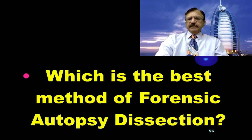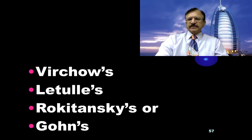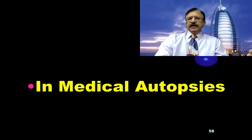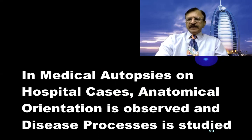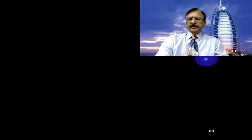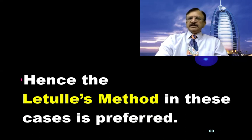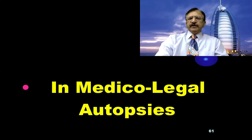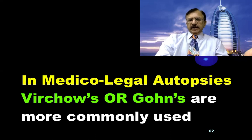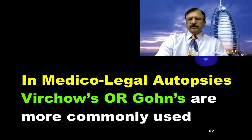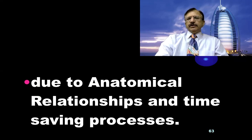So which is the best method of forensic autopsy dissection — Virchow's, Letulle's, Rokitansky's, or Ghon's? In medical autopsies on hospital cases, anatomical orientation is observed and the disease process is studied, so Letulle's method is preferred in these cases. In medico-legal autopsies, Virchow's and Ghon's techniques are most commonly used, because anatomical relationships are maintained and it is a time-saving process.